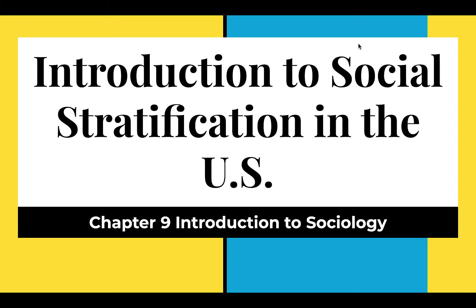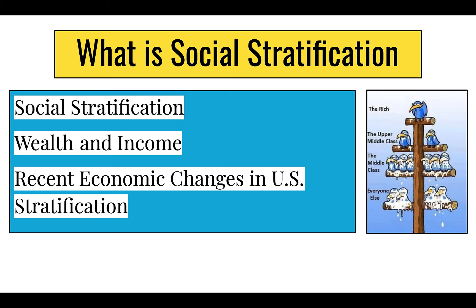This is Chapter 9, Introduction to Social Stratification in the United States, for Sociology 1. Social stratification refers to how a society categorizes people into rankings of socioeconomic tiers based on factors like wealth, income, race, ethnicity, education, and power.